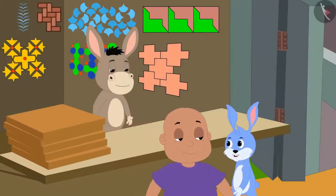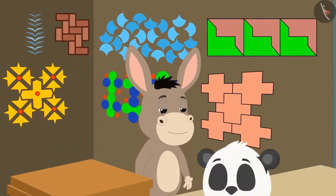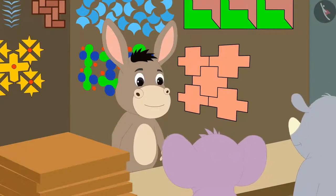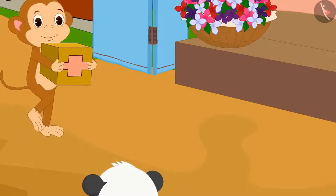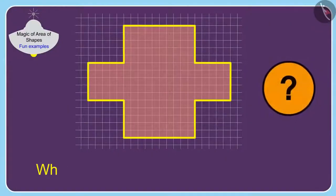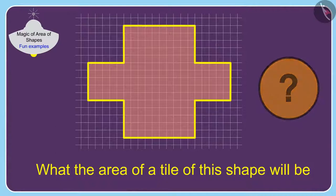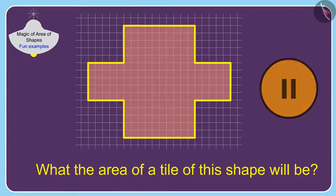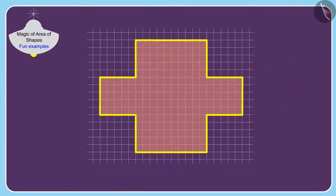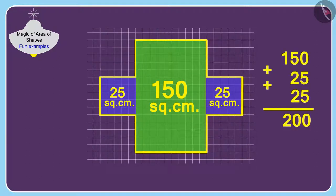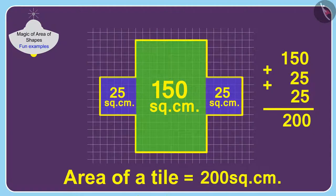Tiles of very beautiful and unique shapes have become available in the market these days. Everyone is decorating their homes with these tiles. Baban bought tiles of this shape to decorate his house. Children, can you tell what the area of a tile of this shape will be? You can stop the video and calculate the answer. To find the area of this tile, we can divide this shape into squares and rectangles. In this way, the area of this tile is 200 cm².